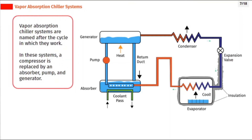Vapor absorption chiller systems are named after the cycle in which they work. In these systems, a compressor is replaced by an absorber, pump, and generator.